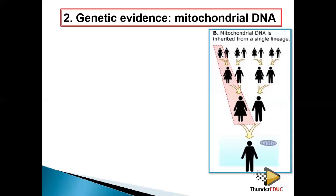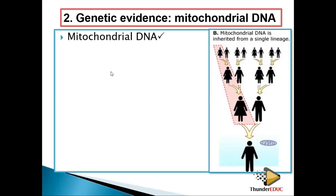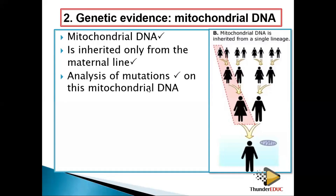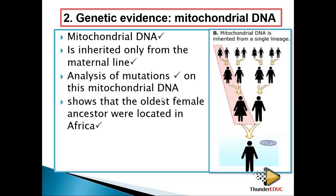So all of us have the mitochondria from our mothers, from our maternal parents. If there is a mutation in the mitochondrial DNA, only that of the mother will be passed to the next generation. So if we try to trace that DNA, we go only through the female line — the father does not give us the mitochondria DNA. We continue tracing until we find the origin. Mitochondrial DNA is inherited only from the maternal line, and analysis of mutations on this mitochondrial DNA shows that the oldest female ancestors were located in Africa.